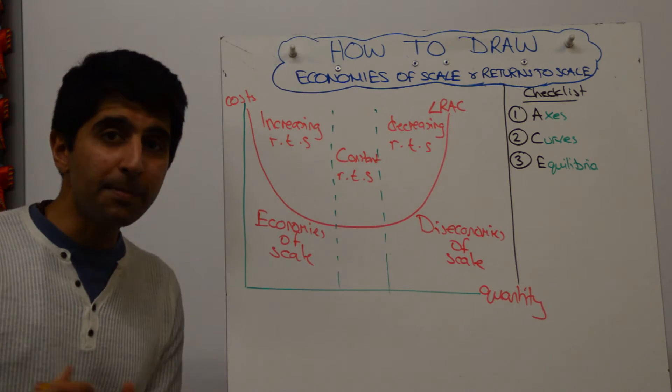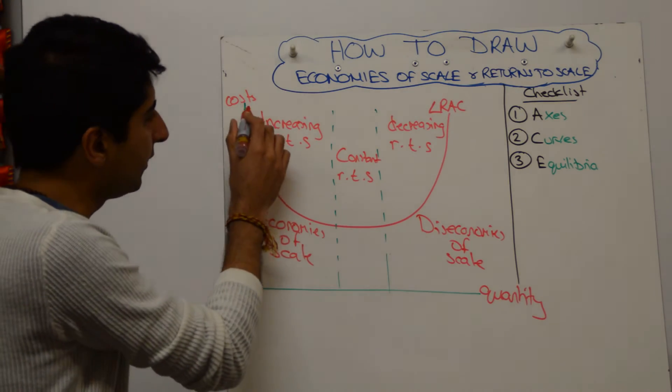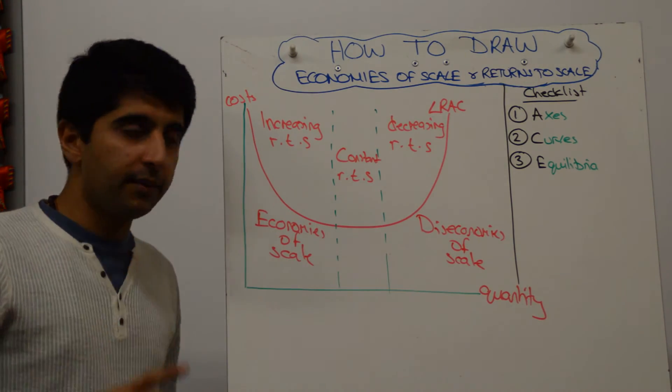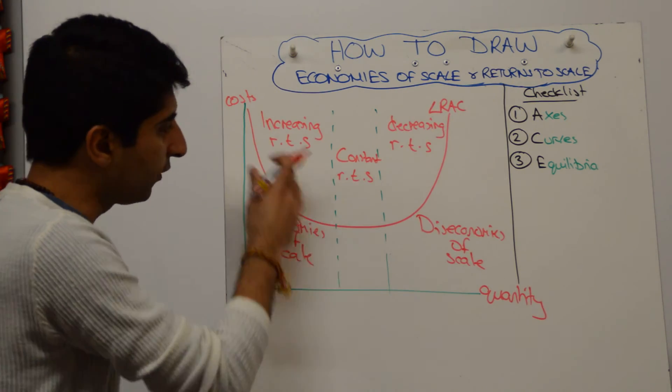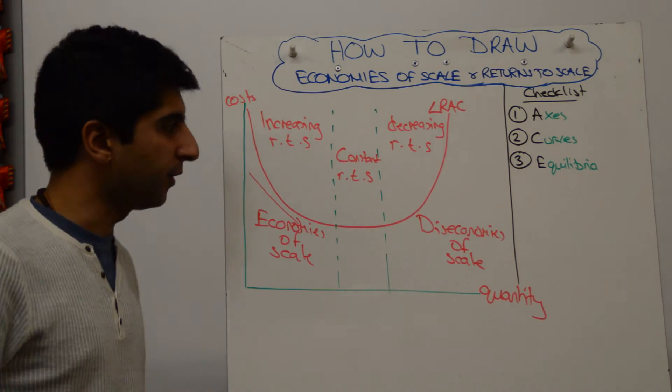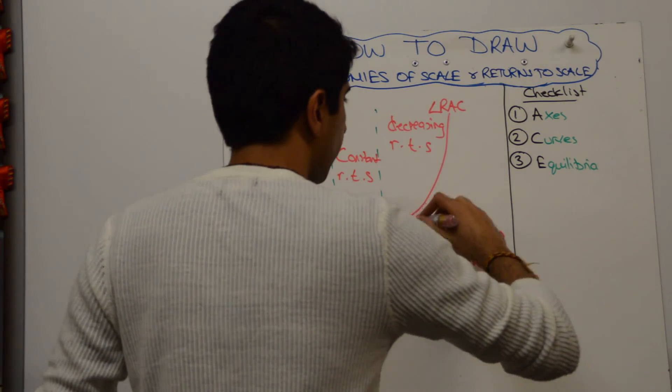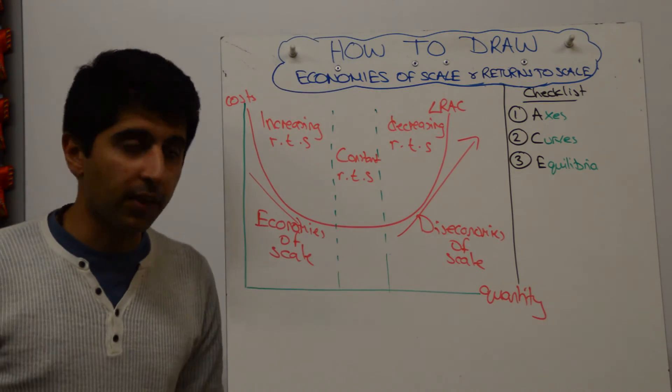If you want to be really pedantic, you can say this entire area where the curve is downward sloping is economies of scale. So you might want to do a little arrow and say, where this curve is decreasing, that's economies of scale. Where this curve is increasing, that's diseconomies of scale.